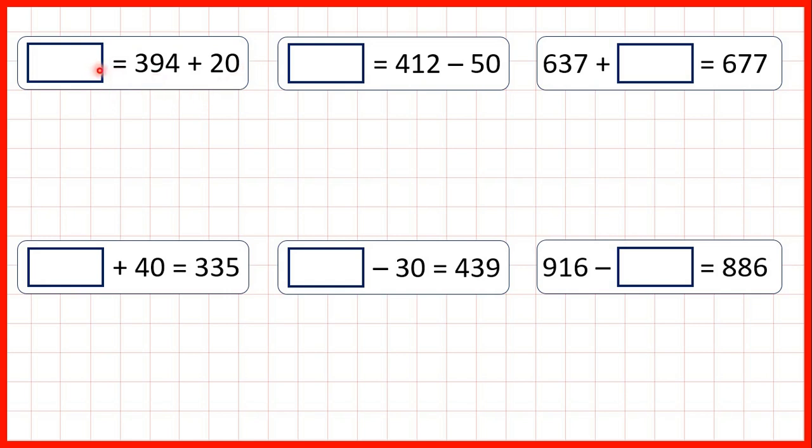So here we just need to work out 394 plus 20. So because we're adding a multiple of 10, we know that our ones digit will stay the same, and 39 plus 2 is 41. So we can change our hundreds and tens digits to a 4 and a 1, leave our ones digit the same, and we get 414.